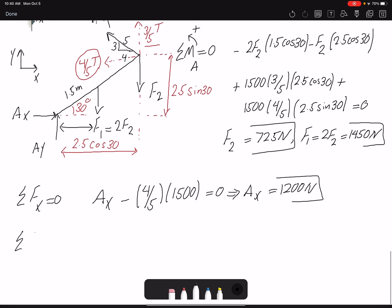Summation of forces in y equals zero. I have Ay minus F1 and F2, so F2 is 725, F1 is 1450, equals zero. So Ay is 1275 Newtons.